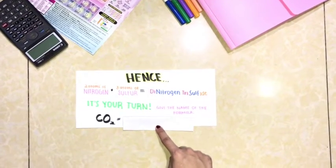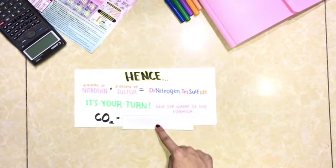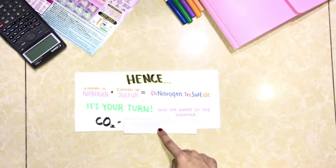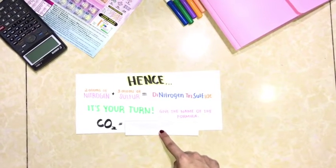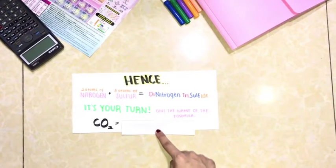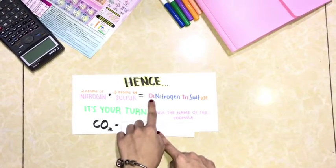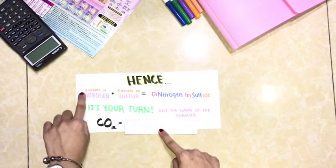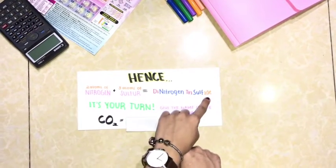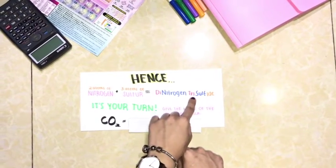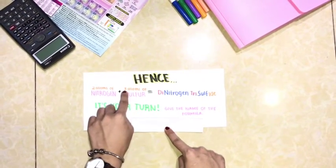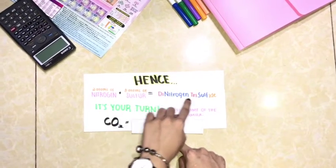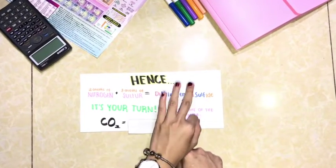Therefore, 2 atoms of nitrogen plus 3 atoms of sulfur gives us dinitrogen trisulfide. Di represents the 2, and trisulfide represents the 3 atoms.